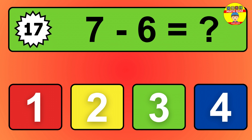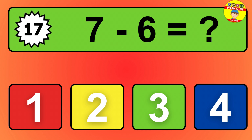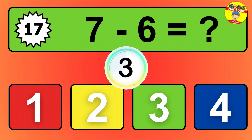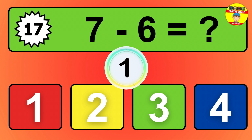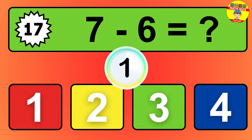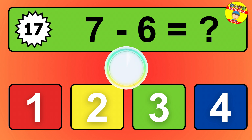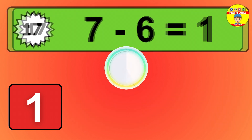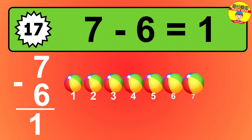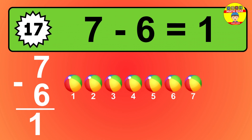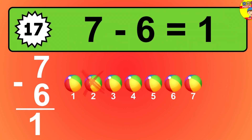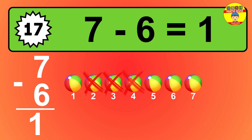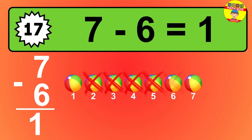Question 17. 7 minus 6 equals what? So the answer is 7 minus 6 is 1. Let's count it. 1.